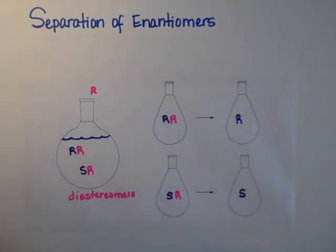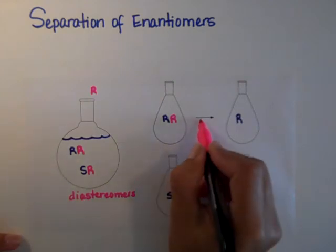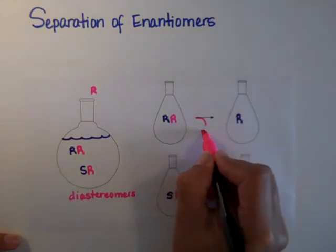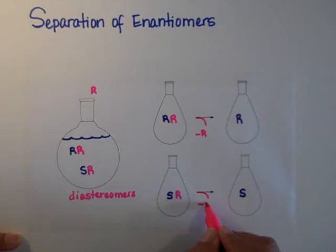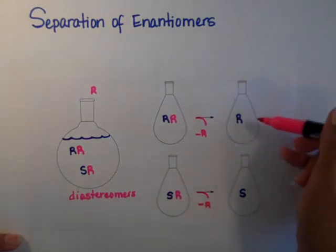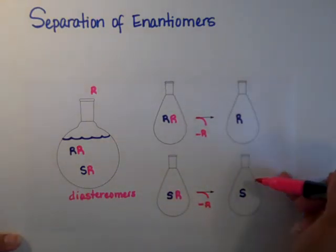But if you actually cut out the R that we just put in, we take out the chiral center we introduced, we have accomplished a separation of enantiomers.